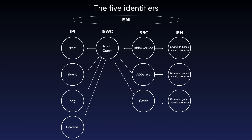So they have four IPIs, and those four IPIs are then linked to the musical work Dancing Queen. It's a funny story — Dancing Queen was the first musical work ever given an ISWC, so it has number one: T-000.000.001. That's amazing.